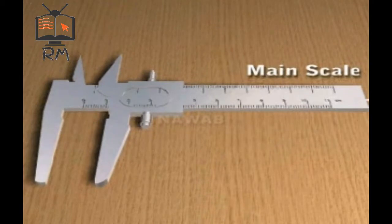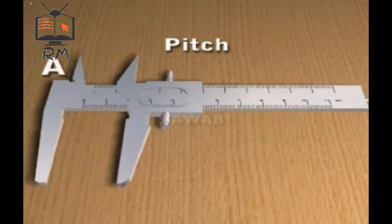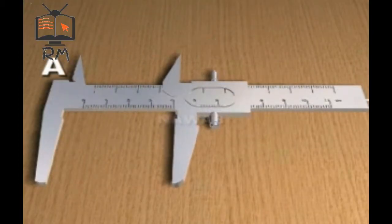The longer line on this scale represents centimeters and smaller lines represent millimeters. The separation between two smaller lines is called the Pitch of the Vernier Calipers. On its left is jaw A.